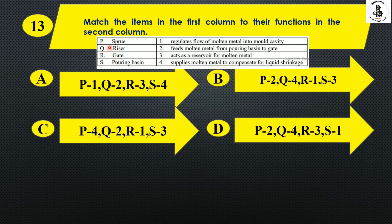Starting with P, sprue: sprue is used to feed molten metal from the pouring basin to the gate, so P2 — this narrows the answer to Option B or Option D. For Q, riser: the riser's function is to supply molten metal to compensate for liquid shrinkage, so Q4. Both Option B and D have Q4.